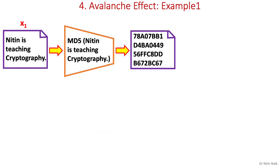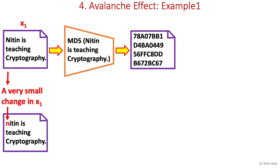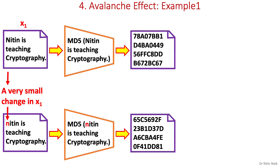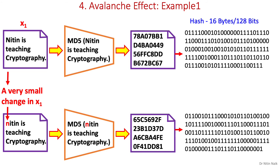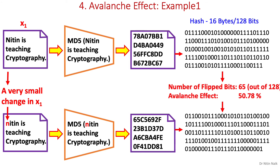Let's look at an example of the avalanche effect. If I change just a single letter of the input text — for example, the first uppercase N to lowercase n — and apply the same MD5 hash function to calculate the hash of this slightly modified input, then the new hash value will be significantly different from the first hash value, although both inputs are almost similar. Converting both hashes into bits and comparing the two bit sequences, the number of bits flipped is 65 out of 128, and the avalanche effect is around 50.78%, which meets the criteria explained earlier.